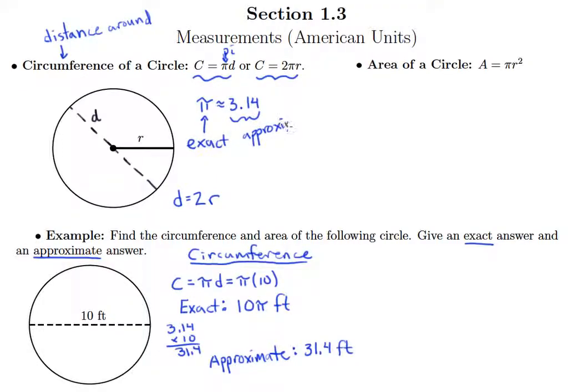So that's how you can remember how to do the exact and how to do the approximate answer for a circumference. If it's exact, it better still have pi in there. If it's approximate, you put 3.14 in and multiply.